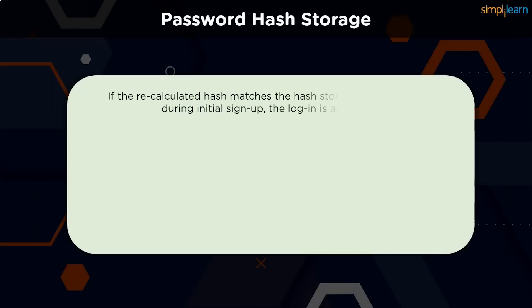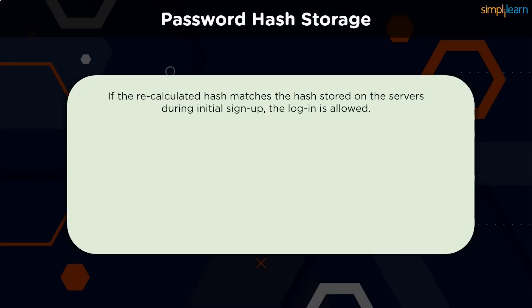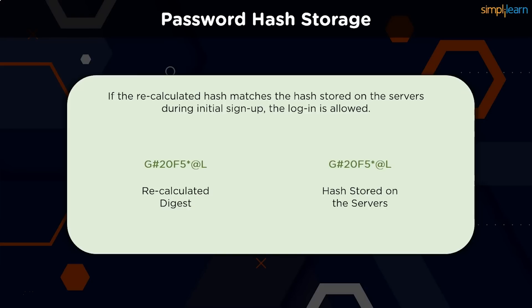Websites use hashing to store user passwords. When a user signs up to a new account, the password is run through the hash function and the resulting digest is stored on the servers. The next time a user logs in, the same password is passed through the hash function again. If the digest matches the one stored on the server, he is allowed to log in. This way, no plaintext password gets stored, preventing snooping on user data and protecting user privacy in the event of a data breach or hack.